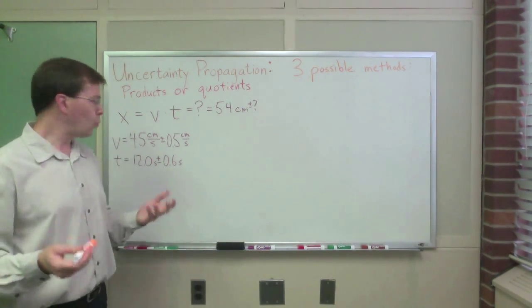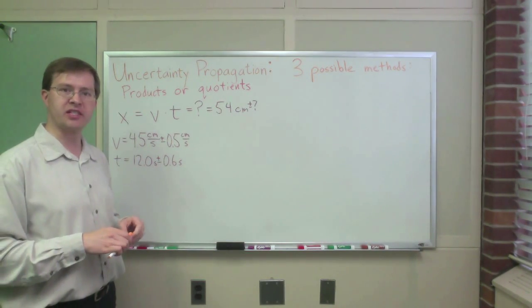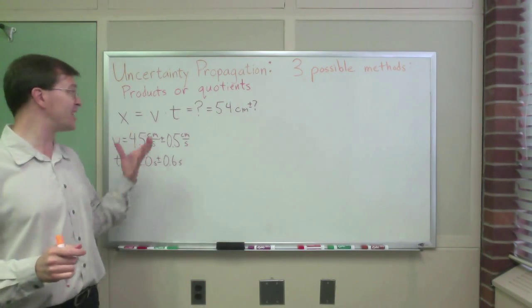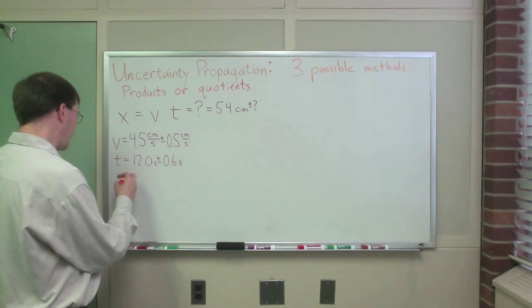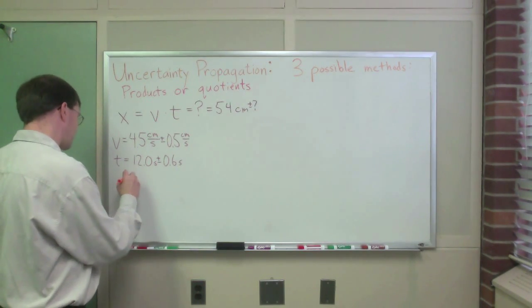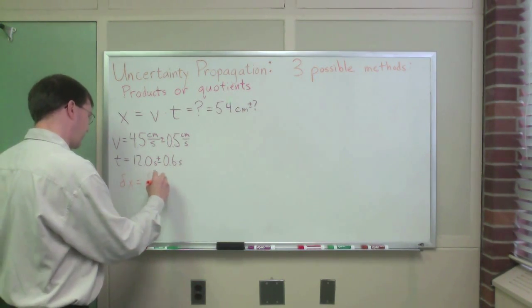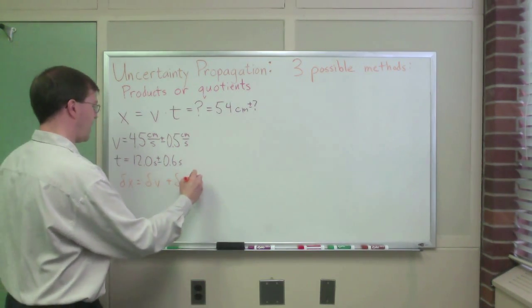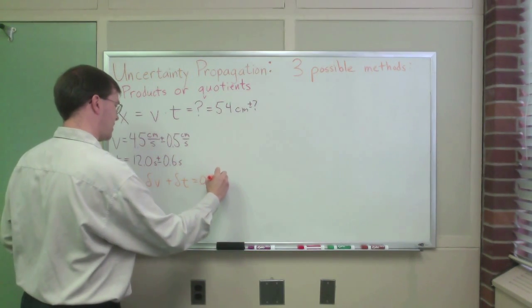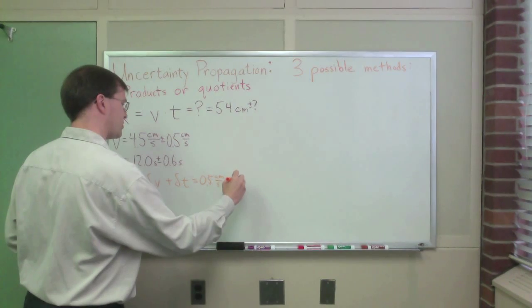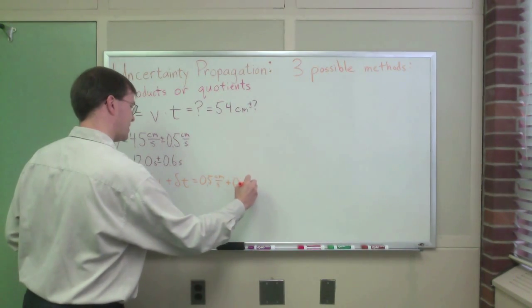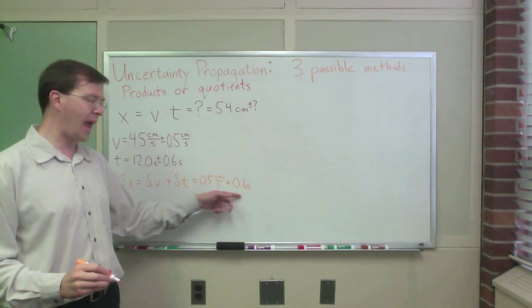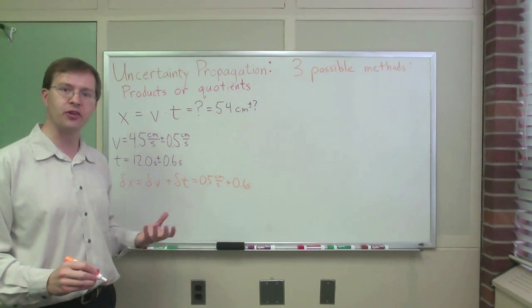But let me point out that it's not as simple as you might think it is. Just for instance, one of the methods, the first method we're going to talk about is the worst case sum. And if we use the same rules that we normally use for addition or subtraction problems, we would say, oh, I just say that I added the uncertainties. Delta x equals delta v plus delta t for the worst case sum version. And I do that, and I get 0.5 centimeters per second plus, always plus, 0.6 seconds. And at this point, the physicist in you should be screaming. Because you can't possibly add two quantities that have different units associated with them.